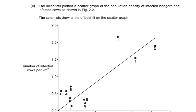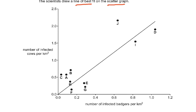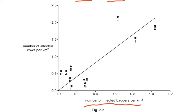Part 2: the scientists plotted a scatter graph of the population density of infected badgers and infected cows as shown in figure 2.2, and drew a line of best fit. The x-axis shows number of infected badgers per km² and the y-axis shows number of infected cows per km². Looking at the scatter graph, the data points are quite randomly spread — areas A through J show no obvious clear correlation.